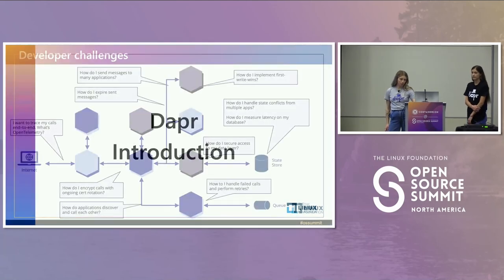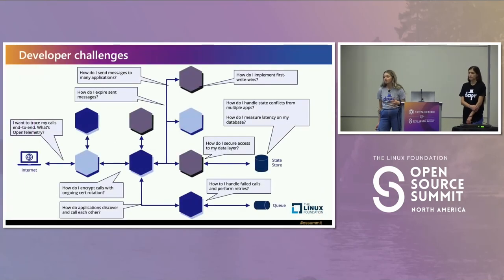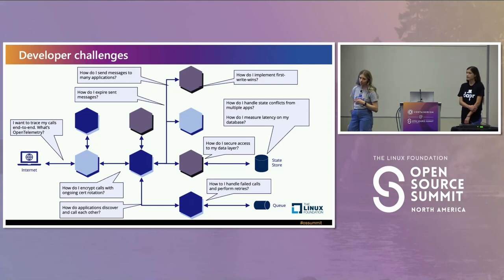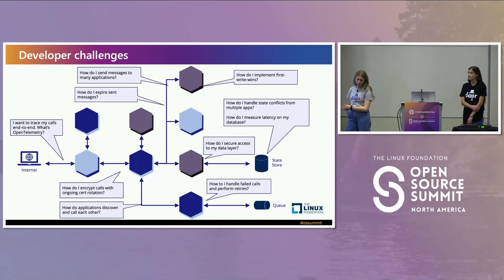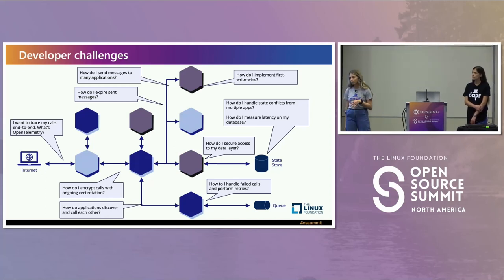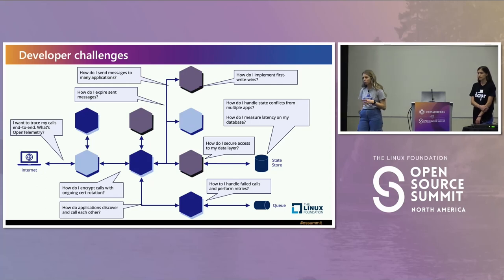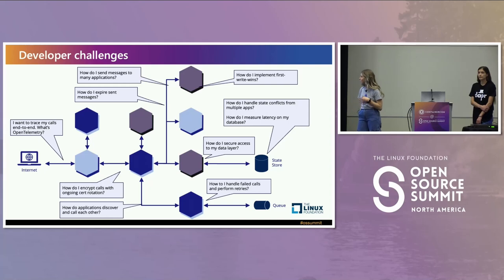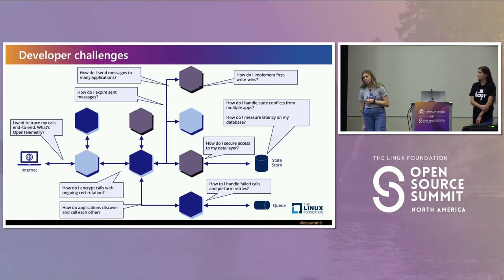It's nothing new to say that there are a ton of developer challenges that devs have to face every day when writing distributed apps. Things like encrypting your calls between services for distributed systems, ensuring you are sending messages from multiple applications and locking down which apps can receive those messages, securing access to the data layer — the list really goes on. And DAPR provides APIs to help developers solve some of these issues.